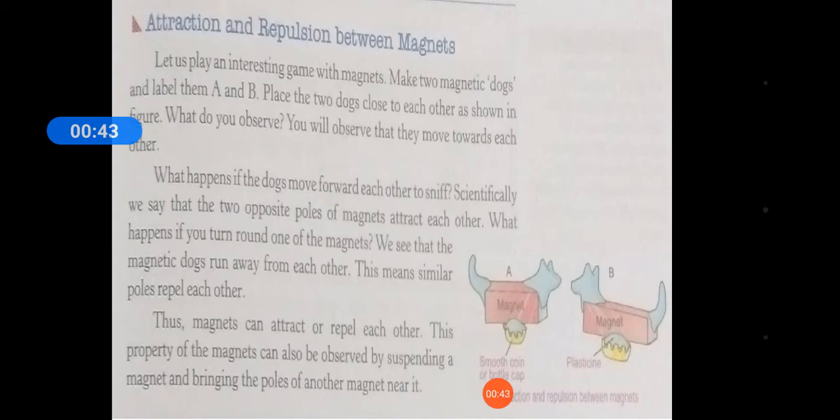What do you observe? You will observe that they move toward each other. So they took two magnets shaped like dogs, and when they placed them with south pole facing north pole, they attracted each other.